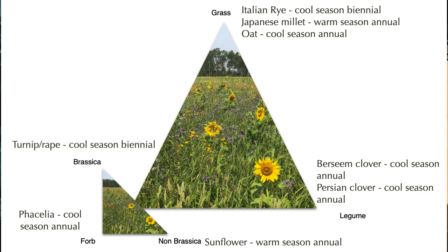Within this blend, going back to the triangles: in our grass group, Italian ryegrass is a cool-season biennial, Japanese millet is a warm-season annual, and oats are cool-season annual. In the legumes, berseem is a cool-season annual, Persian is a cool-season annual. In the broadleaf: sunflowers are a warm-season annual non-brassica; turnip rape is a cool-season biennial brassica; and phacelia is a cool-season annual forb. We have each one of those groups being represented, and within each group we have different choices.